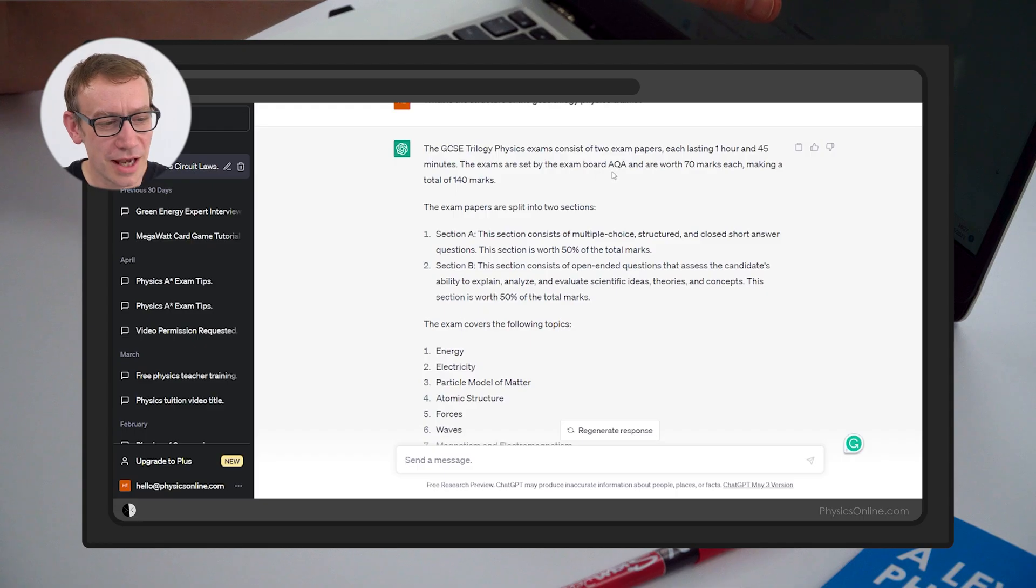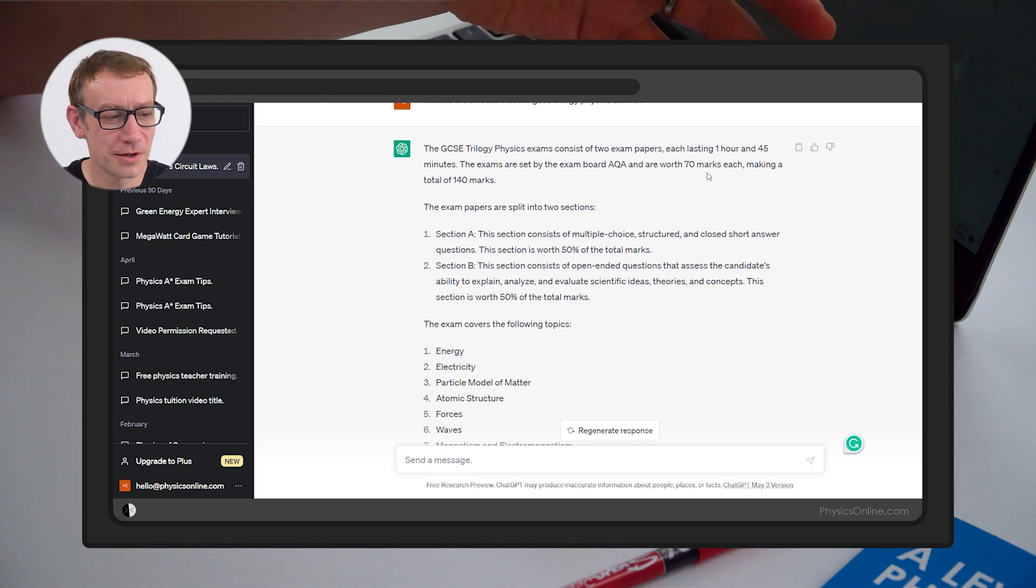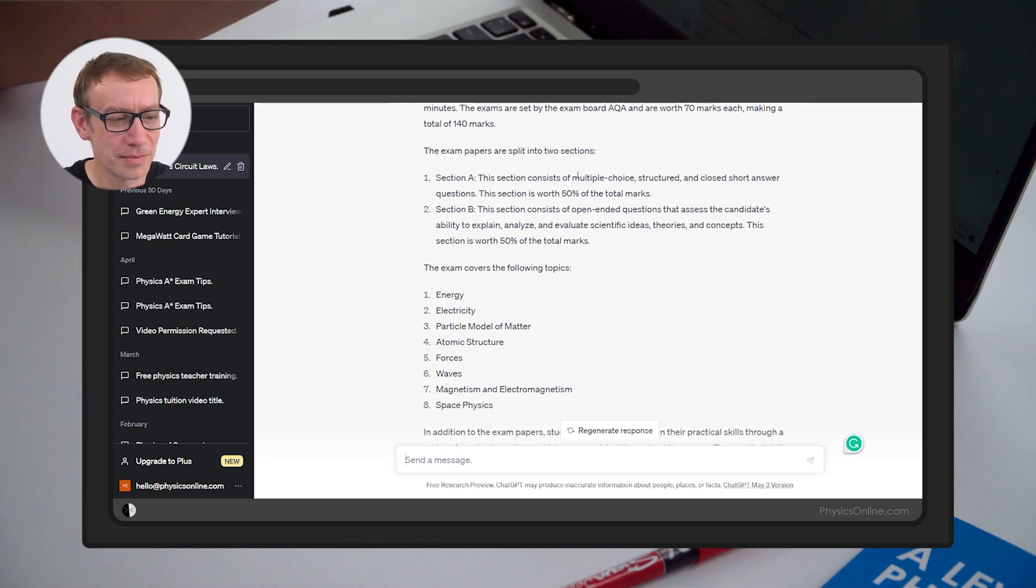The exams are set by AQA and are worth 70 marks each. Well, that's true if we're talking about trilogy. The exam papers are split into two sections. Section A is multiple choice worth 50%, and section B consists of open-ended questions that assess a candidate's ability to explain, analyze, and evaluate scientific ideas. I don't think that's really true. There's not really this kind of section A and then section B is just open-ended questions.